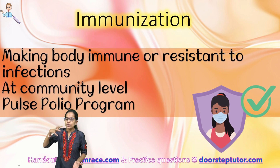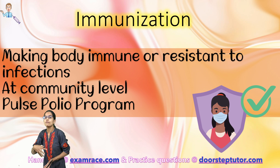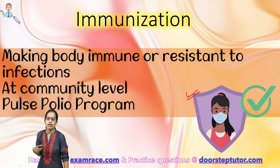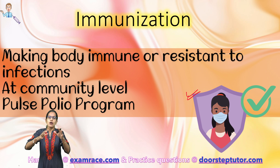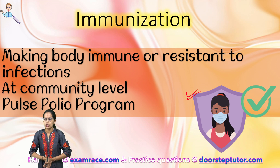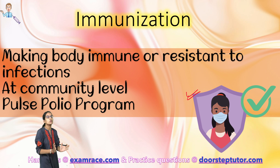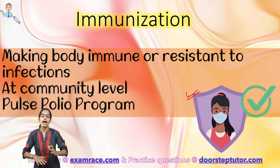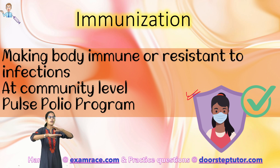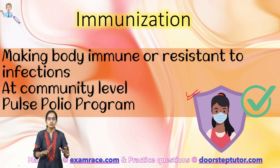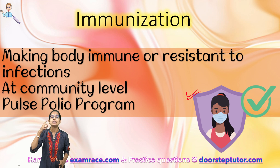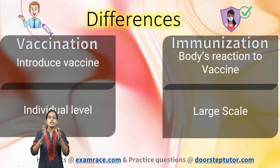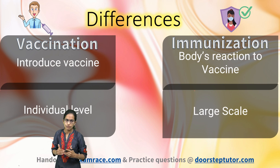Immunization is a process that occurs after the vaccine is administered. Once the vaccine is administered, the body gets a resistance to that infection — a shield of protection against that infection — and this protection is known as immunization. Immunization occurs at a community level when the community or a large set of people get resistance to the disease. The pulse polio program in India is an immunization program where we tend to achieve herd immunity or reduce the prevalence of the disease to a very significant level.